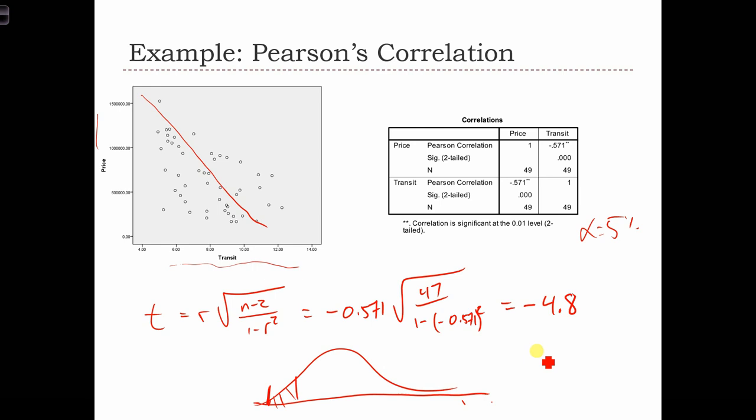So here again, we would reject the null hypothesis that price and transit are independent. Instead, we would favor the alternative hypothesis that price is negatively correlated with distance to transit. In other words, as houses get farther away from the closest transit stop, we see a decline in house pricing.